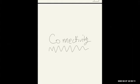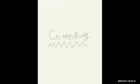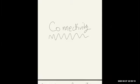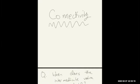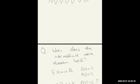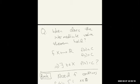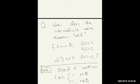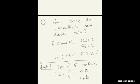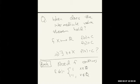We get to the more interesting part of today's lecture, which is connectivity. We'll mostly motivate today, then define connectivity. So the main question is: when does the intermediate value theorem hold?